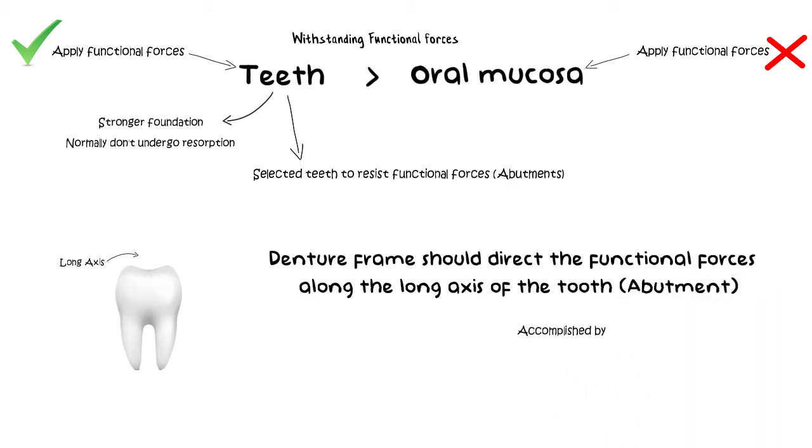So the rests are basically those components of the partial denture that have to perform this one main goal of providing axial loading. However, this may not always be possible, so some sort of tooth modification may be required in order to accomplish this main goal of directing the forces along the long axis of the tooth.